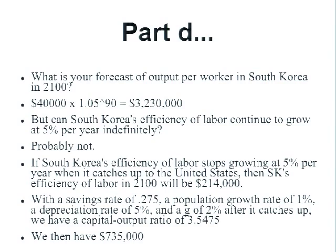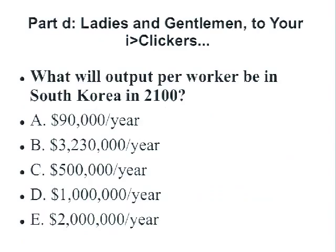Looking at clicker results: I actually was supposed to put $735,000 up there and didn't, so none of these answers are my preferred ones. A student asks: is there information missing on the problem set? The slide gives you the value of alpha and g — alpha is one-half, and g is 5% and 2% respectively. But some of the numbers are different on the actual problem set.